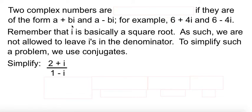Now, look at these two complex numbers, a plus bi and a minus bi. Or if you look here, 6 plus 4i and 6 minus 4i. They're alike except for the middle sign. In that situation, they're called complex conjugates.